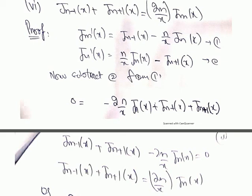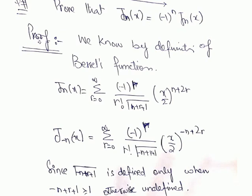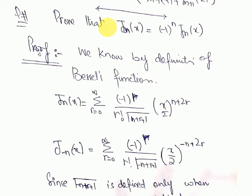To summarize: when proving the third and fourth recurrence relations we used the first and second; when proving the fifth and sixth we used the third and fourth. Now we have a question relevant to Bessel's function to prove.